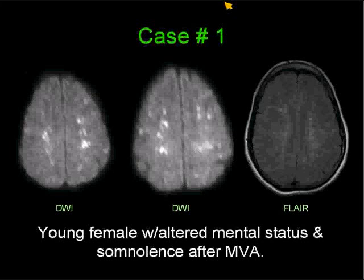Three images on a young female with altered mental status and somnolence following a motor vehicle accident. Shown from left to right are two consecutive diffusion-weighted image slices, and on the right is a FLAIR image slightly lower than the DWI level. The clinical context: a young mother selling Girl Scout cookies was crushed against a grocery store wall by an elderly gentleman who drove away without realizing what he had done.